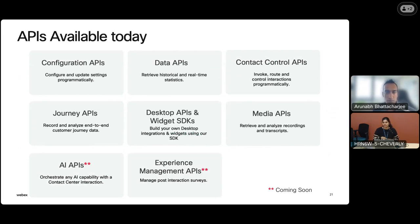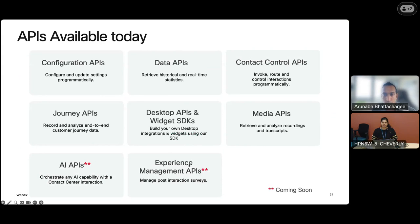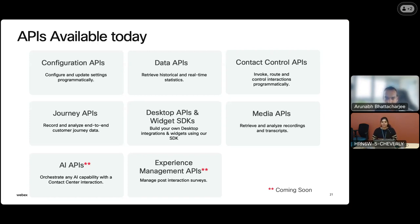In our developer portal today, if you're trying to build a custom desktop, you would want to see how to leverage the APIs — like a desktop API to log in and log out, contact control APIs to route calls or interactions, and multiple other APIs like journey APIs which help with the customer journey — understanding their history or past with your business. The agent would be able to serve them based on previous interactions. We'll be adding AI APIs and experience management APIs — experience management is essentially post-call survey — so you'll also be able to help customers after the call.